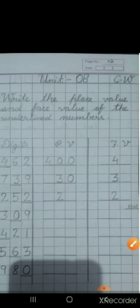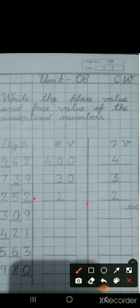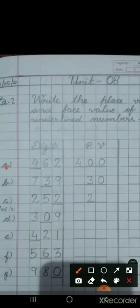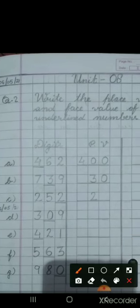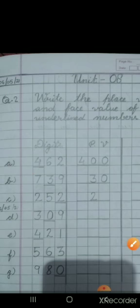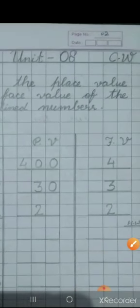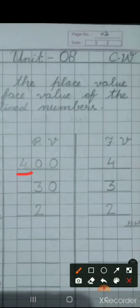So, you will draw two lines. For that, one column to write digits, second column to write the place value and third column to write the face value. On number A, you can write the number 462. 4 is underlined, so you have to tell its place value, that is 400, and you have to tell its face value, that is only 4.